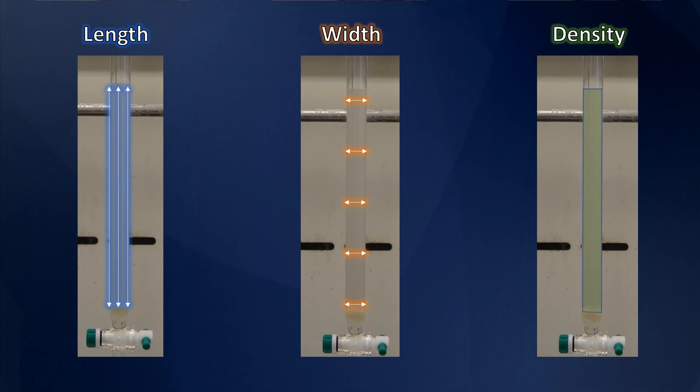If we can create a column that has these three critical properties, we stand a much better chance of having a successful separation. And today I'm going to show you how to do that using a technique known as wet packing a column. So let's get started.